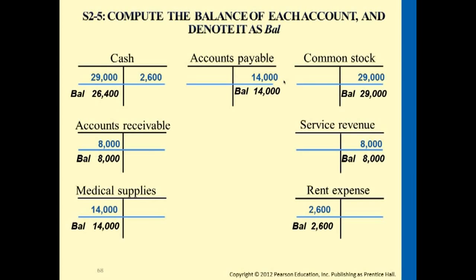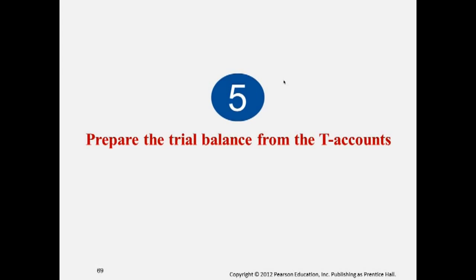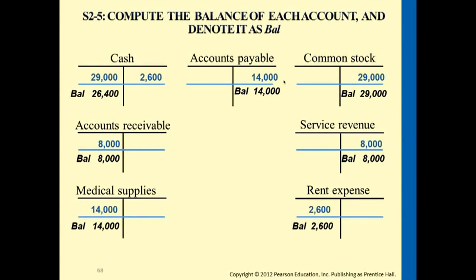The trial balance is an internal document — it's not disclosed to the public. It supports the process of getting to financial statements by summarizing this information. It's organized based on the accounting equation sequence: starting with assets, then liabilities, then equity — the same sequence as how we write the accounting equation.